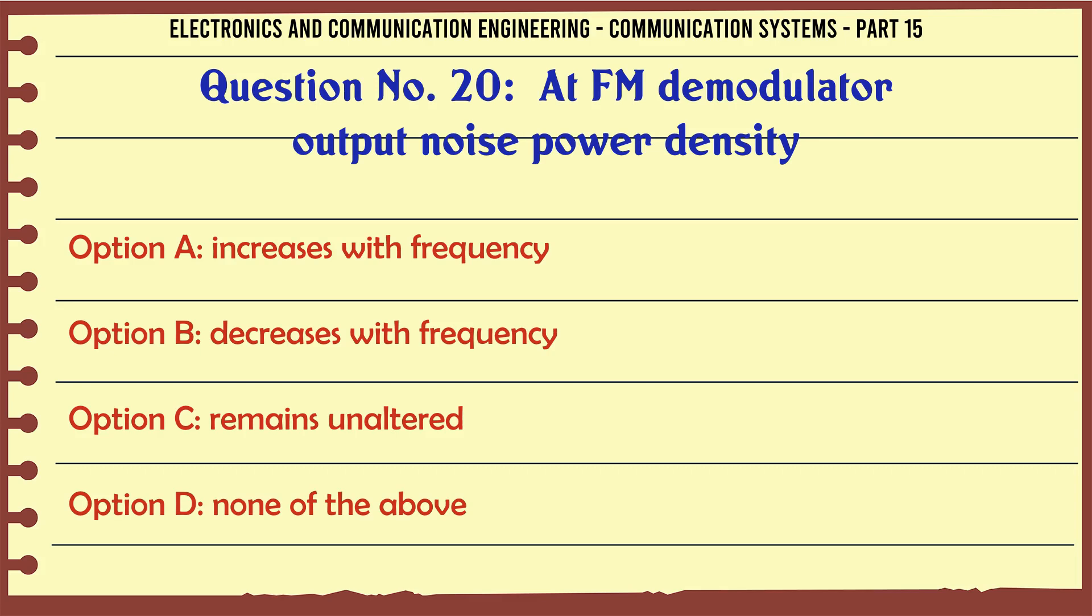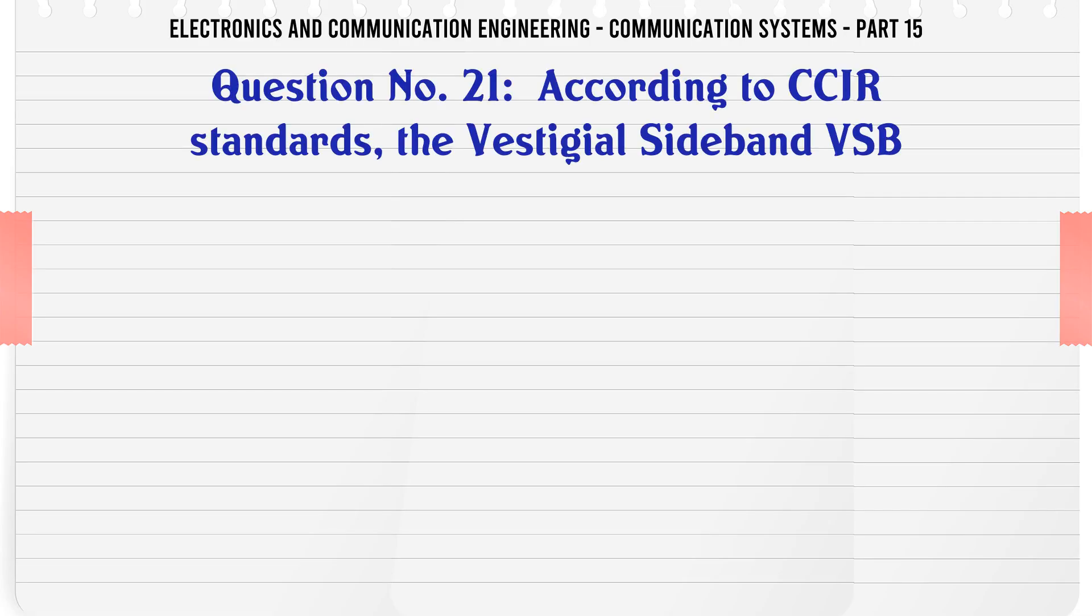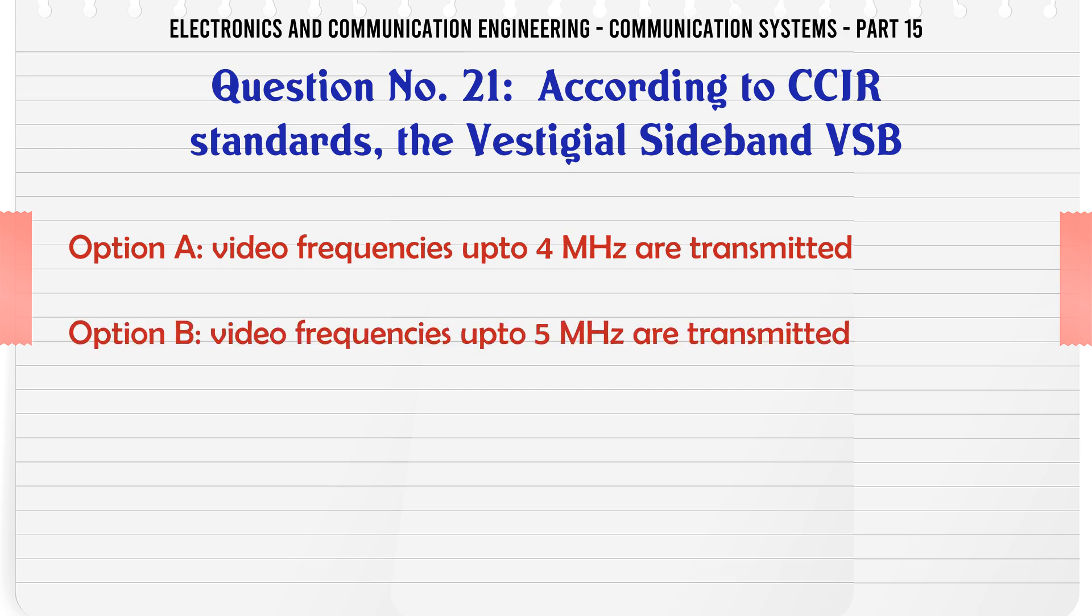At FM demodulator output noise power density: A increases with frequency, B decreases with frequency, C remains unaltered, D none of the above. The correct answer is increases with frequency.